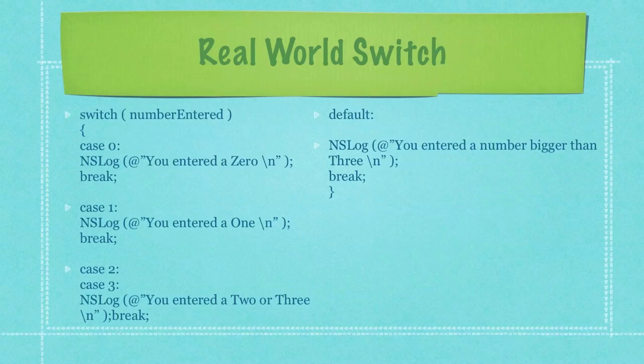Let's jump down here and look at case 2 followed by case 3. What this is doing is if the person entered a value of 2 or 3 we're going to print out to the screen you entered a 2 or a 3.